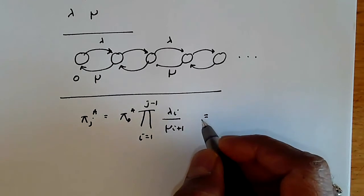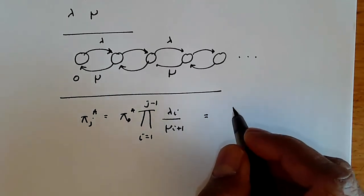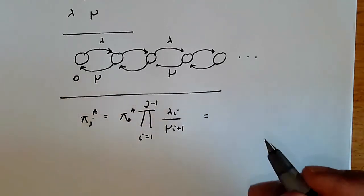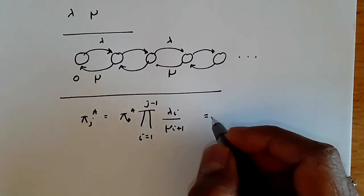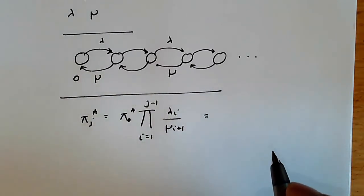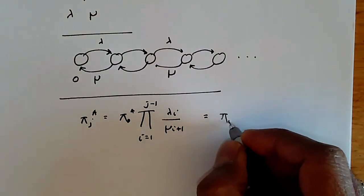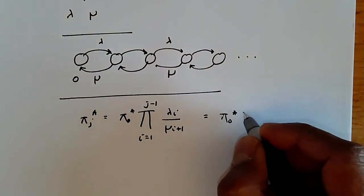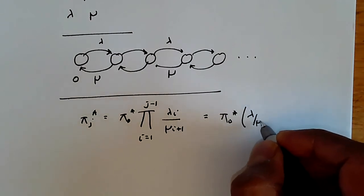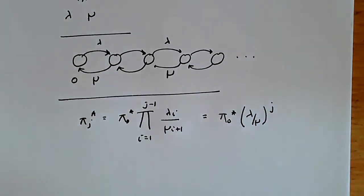For the MM1 queue, lambdas and mus are all the same. So this reduces to the simpler equation, which is that pi j star is pi zero star times lambda by mu to the power j, which is quite straightforward.